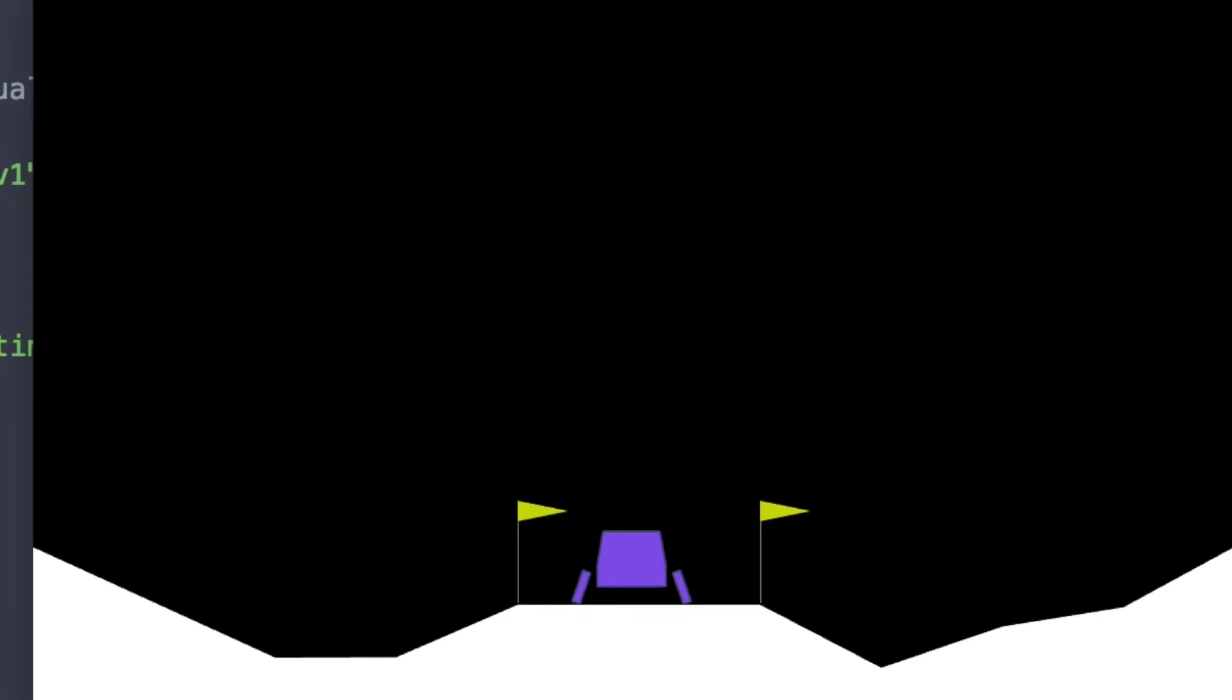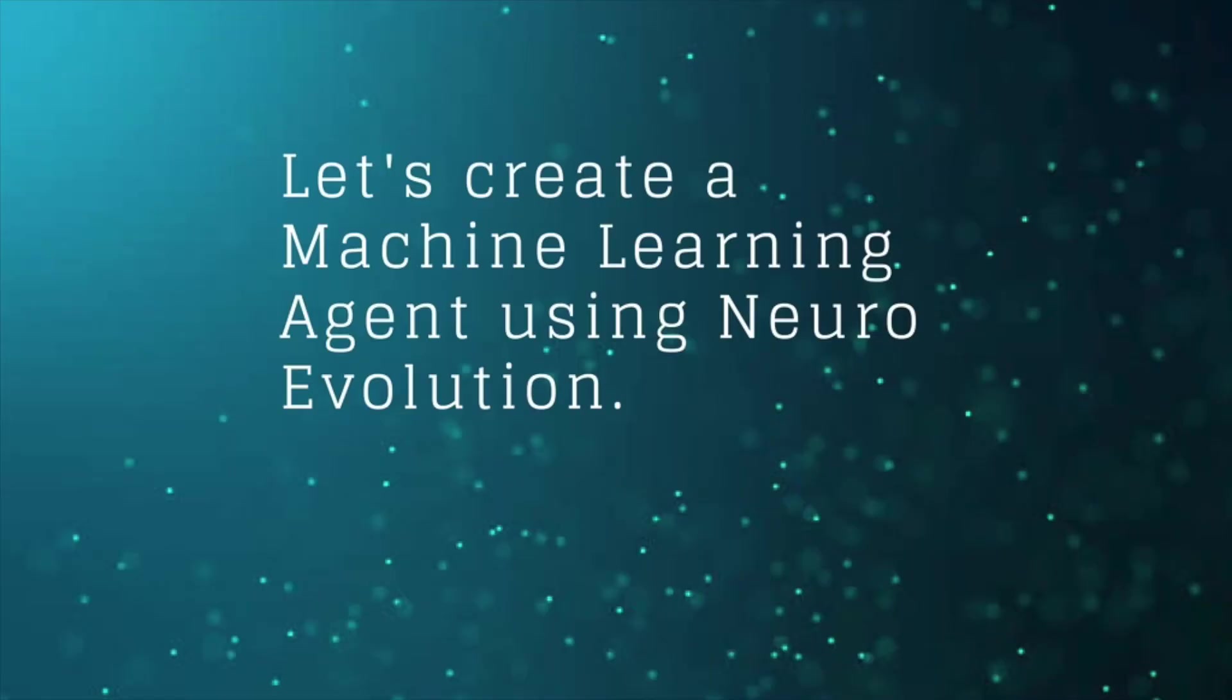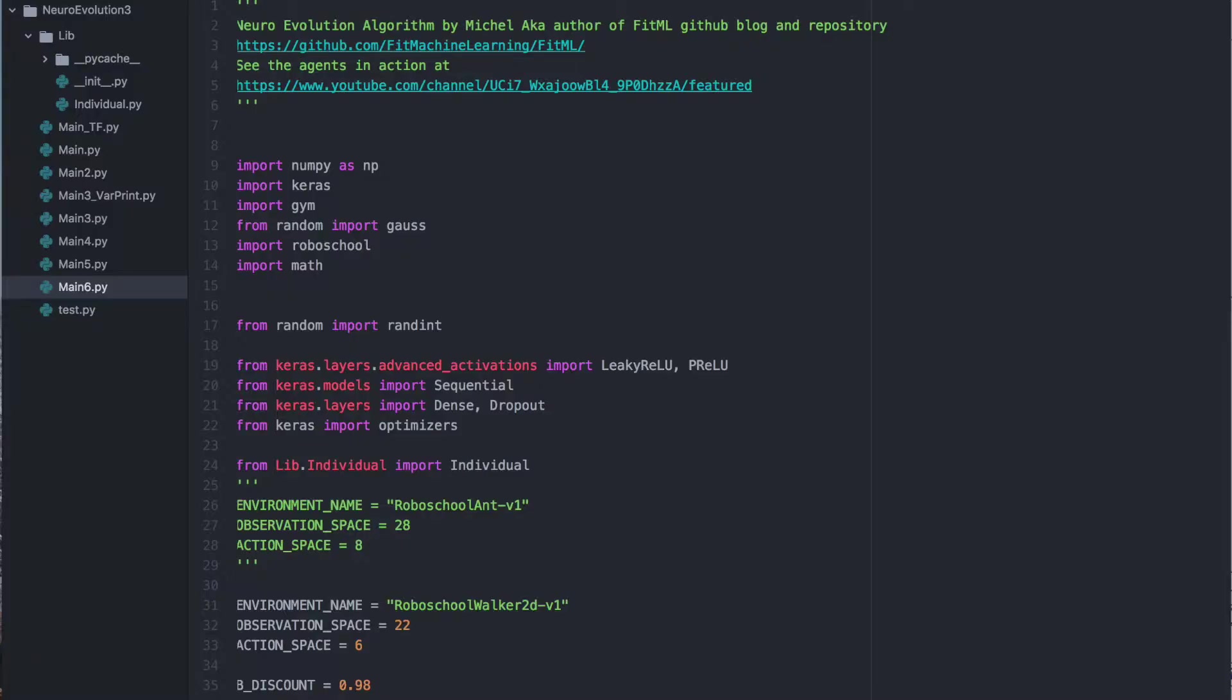So how do we program an AI agent so that it can learn to walk or fly using neuroevolution approaches, even in very complex continuous action space problems? We'll break down those steps today.